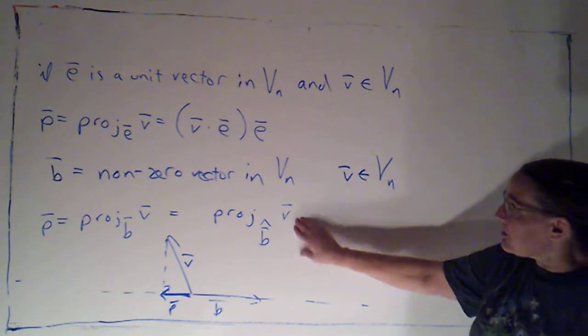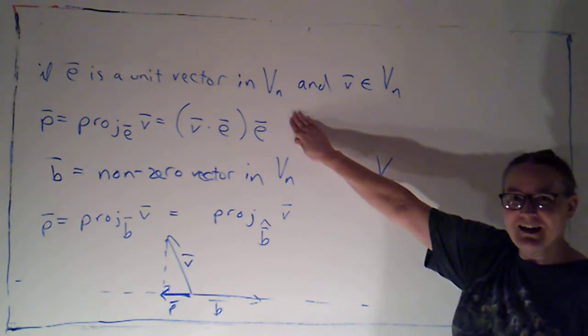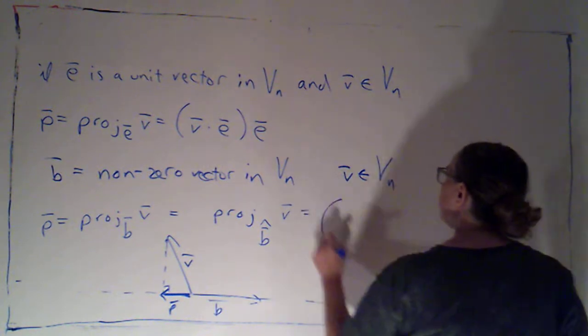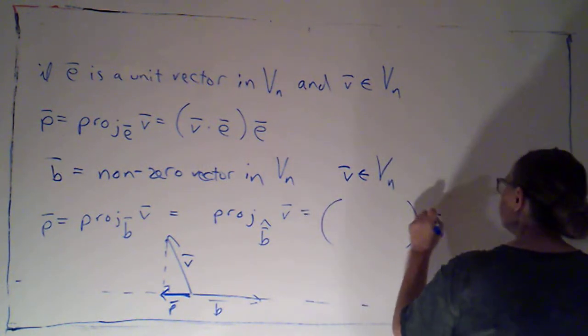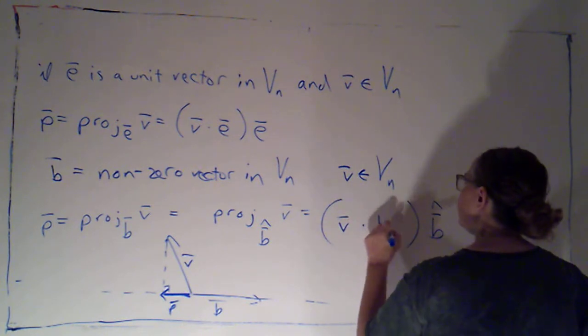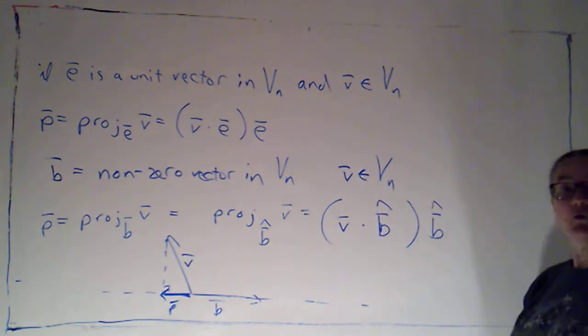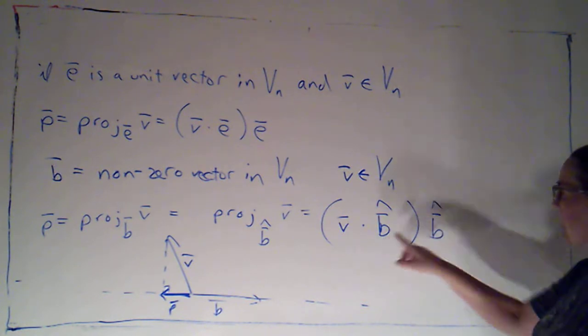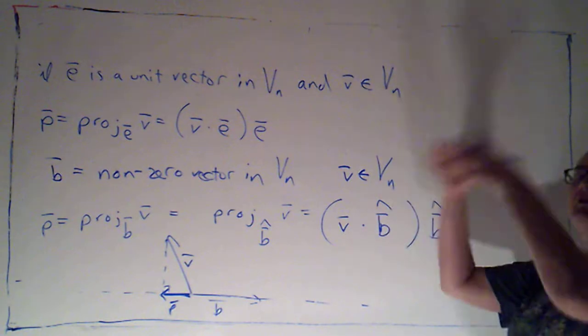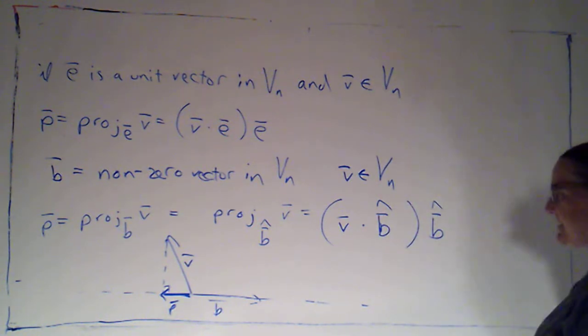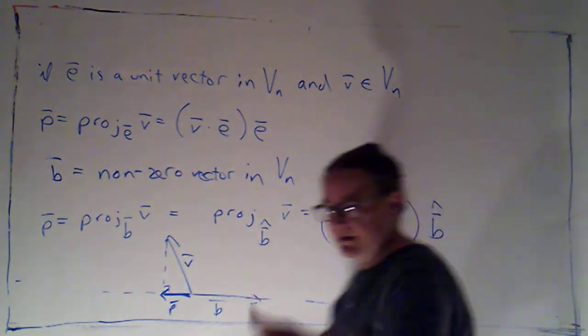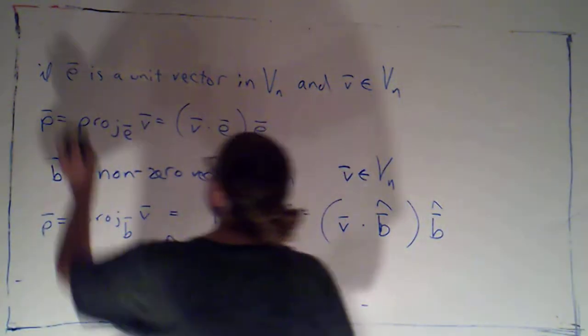So now I can say, oh, well I can just use this formula with B hat in place of E. So I know that this is just going to be a multiple of B hat. And the scalar multiple is V dotted with B hat. But then I can actually work this out. Because I know that B hat is just B normalized, scaled by the reciprocal of its magnitude. So let me clear some space and give myself a little bit more room here.